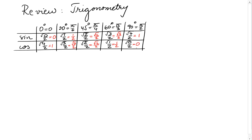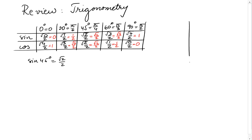How long did it take to make this table and explain it? Less than 2 minutes. So if you want to know what sine of 45 degrees is, it's very simple — square root of 2 over 2, just by reading the table.